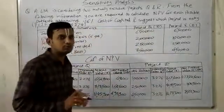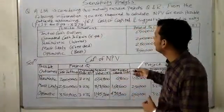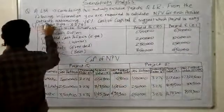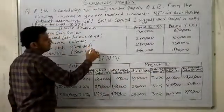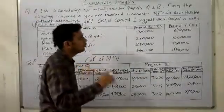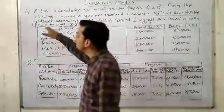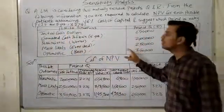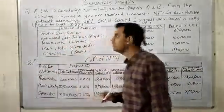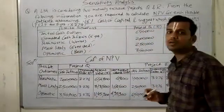We will now discuss a question. A limited company has two mutually exclusive projects, Q and R, from which we have to select one. We are required to calculate NPV for each possible outcome. Remember, there are three possible outcomes — pessimistic, most likely, and optimistic — and we have to calculate for all three outcomes for both projects. We have been given PVIF directly since cash inflows are the same for five years, with a discounting rate of 16% cost of capital. We have to suggest which project is riskier.